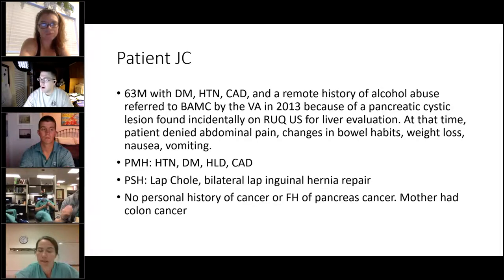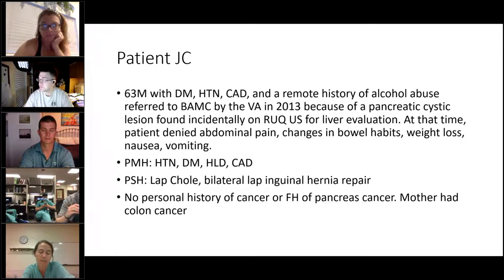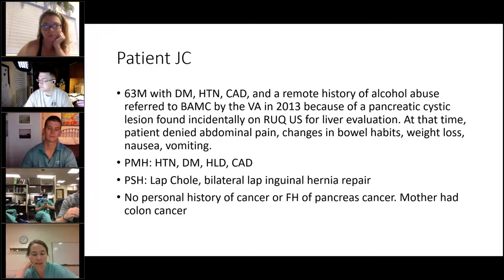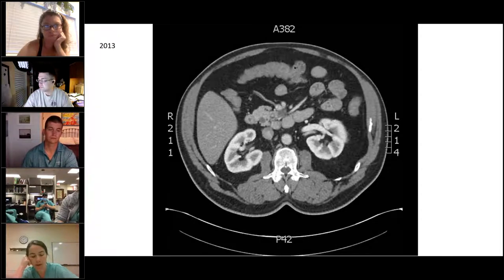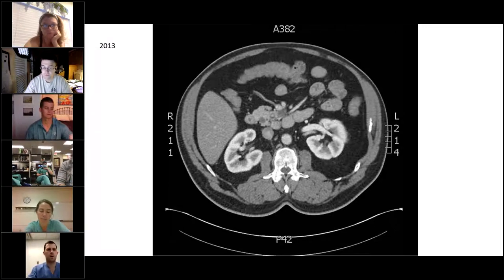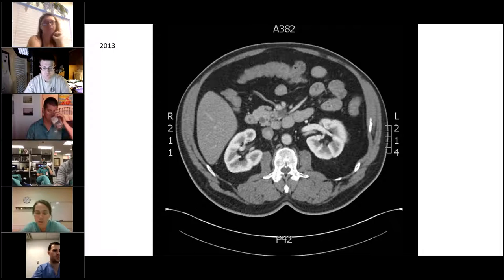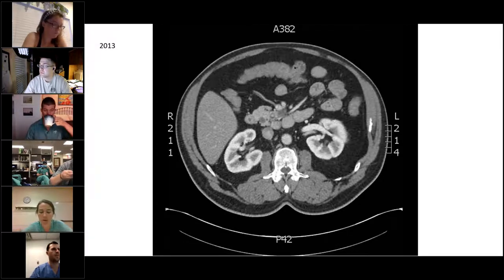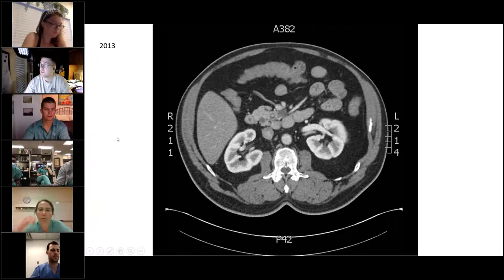The patient states the lesion was found incidentally on a right upper quadrant ultrasound he was getting for evaluation of his liver. There was some concern that he maybe had fatty liver disease or cirrhosis. The patient underwent a CT scan at that time, which showed a circumscribed hypodense mass involving the uncinate process of the pancreas. The mass measured 2 by 1.7 by 2.3 centimeters, and imaging findings favored branch duct type IPMN. So for this 63-year-old male with this incidentally noted mass on CT imaging, what would be our workup?